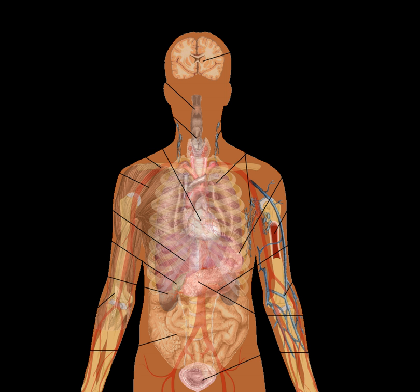Many societies have a system for organ donation, in which a living or deceased donor's organ is transplanted into a person with a failing organ. The transplantation of larger solid organs often requires immunosuppression to prevent organ rejection or graft-versus-host disease. There is considerable interest throughout the world in creating laboratory-grown or artificial organs.